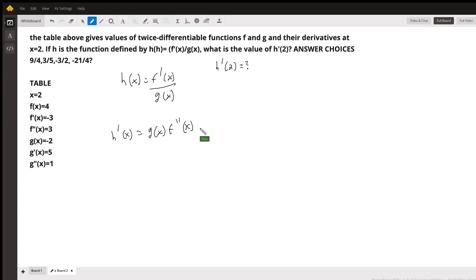minus high, so the numerator, f prime of x, times d low, so the derivative of the denominator, which is g prime of x, underneath the square must go. So you put underneath the square of the denominator, so that would be g of x squared.